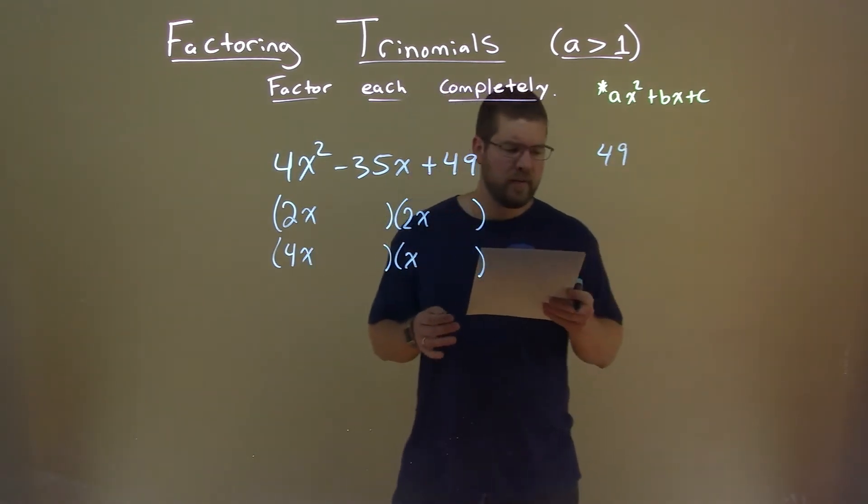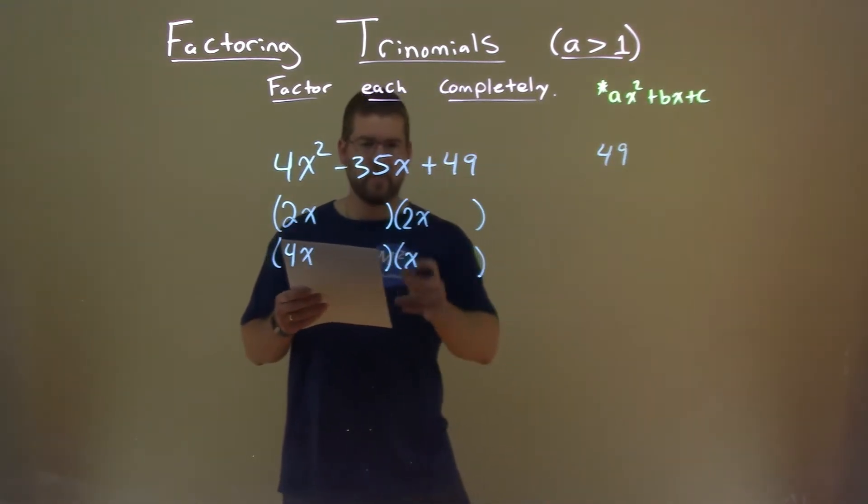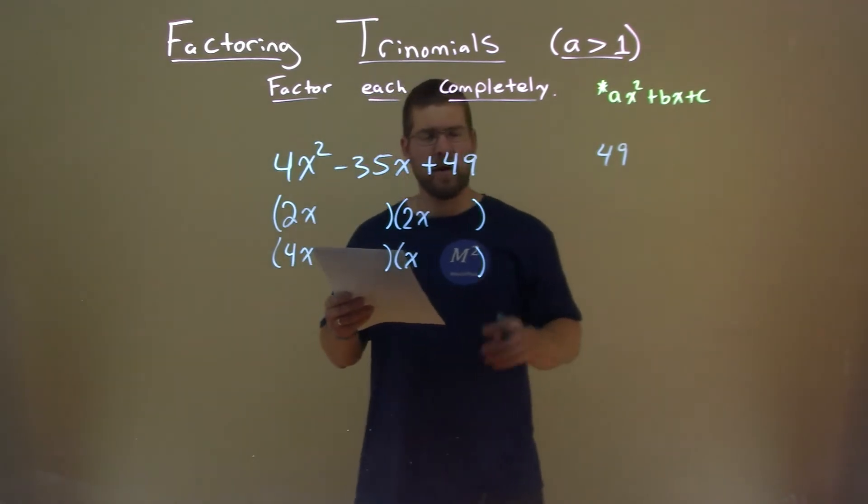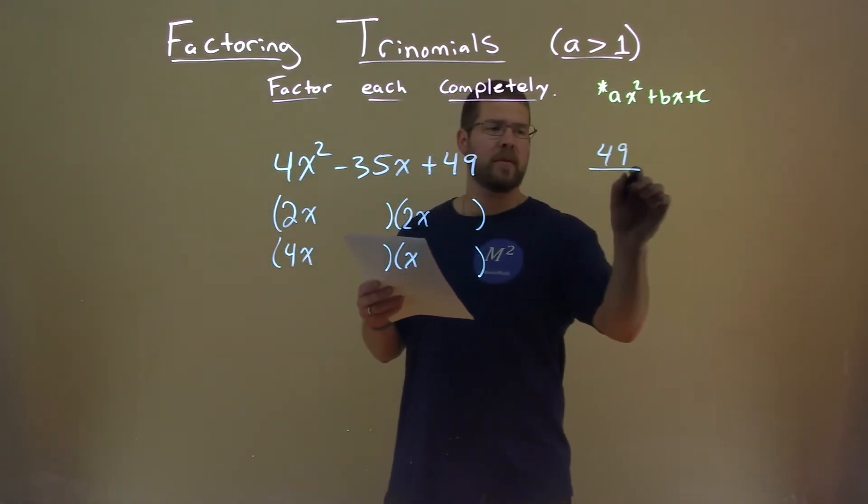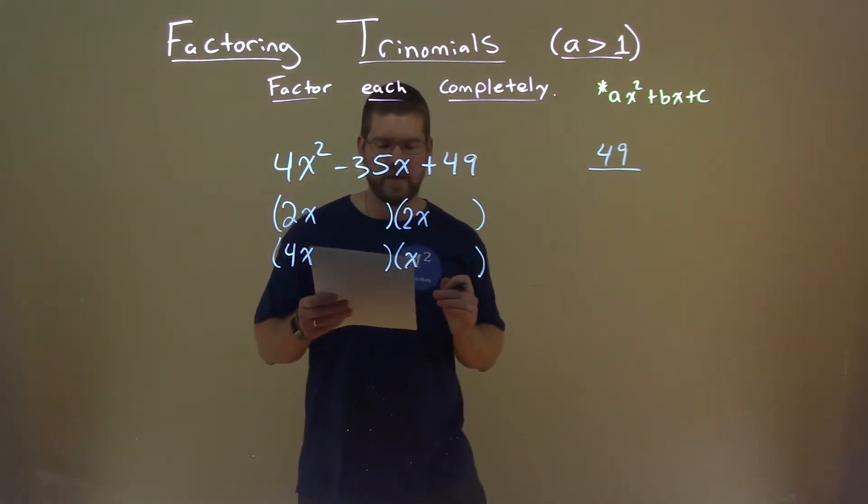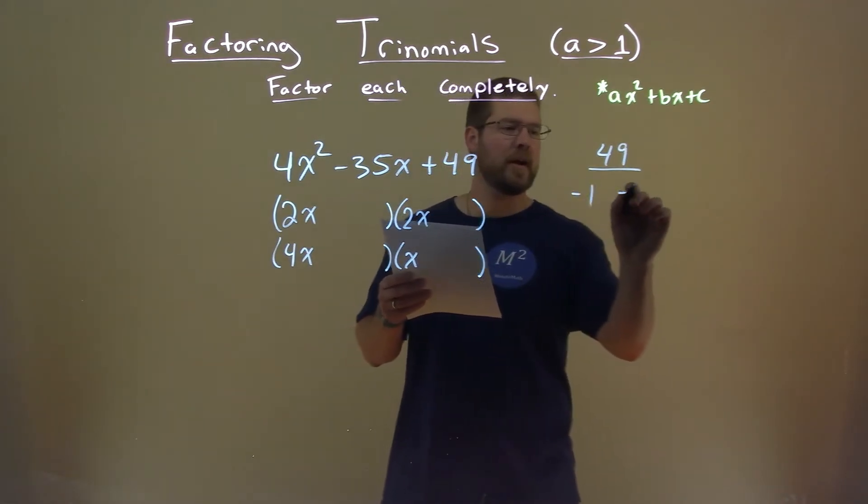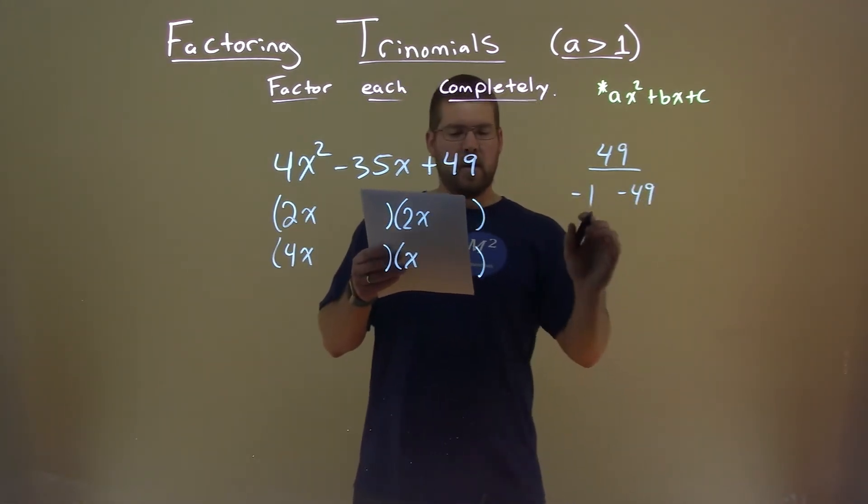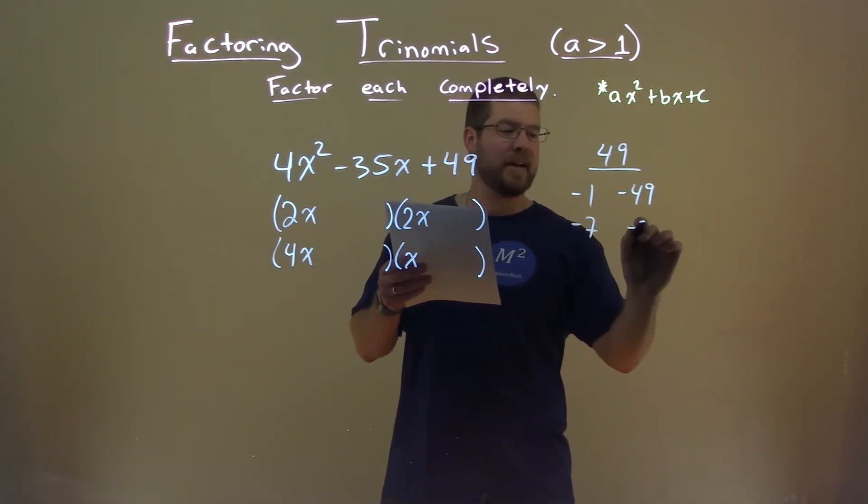All right, so our c value is a positive 49, but since our b value is negative, we know that both of these numbers that multiply to 49 both will have to be negative. So it's either negative 1 and negative 49, or negative 7 and negative 7.